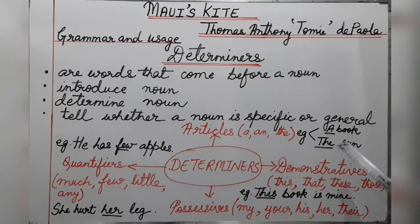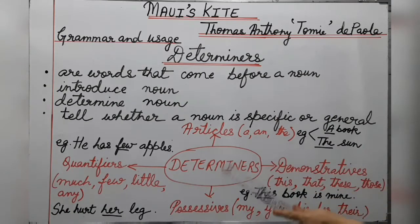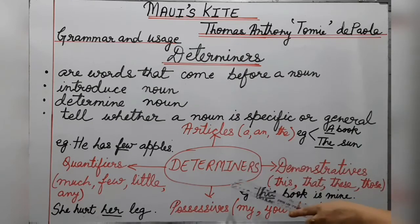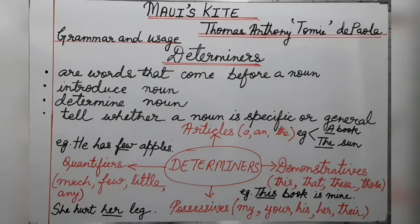Determiners always come before a noun. Now you may get confused that adjectives also come before a noun. So you can say that determiners are a category of adjectives, but you cannot say they are all adjectives. For example, in 'blue sky,' blue is not a determiner. So don't get confused between determiners and adjectives.